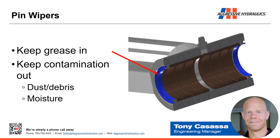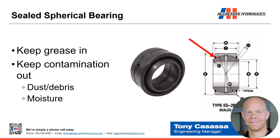Pin wipers are a type of seal that provides sealing both ways — keeping contamination out in dirty, dusty environments, keeping moisture out, and also functioning to keep the grease in. If we don't have a pin wiper, there's really nothing that keeps the grease from coming out between the gap between the bearing and the pin. The same applies to spherical bearings: we have the ball and the race, the grease hole, and a grease circuit. Grease comes in and lubricates that surface. If we have a sealed bearing, those seals keep the grease in and likewise keep the dust, debris, and moisture out.